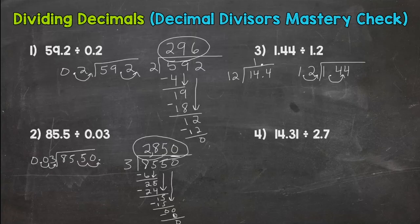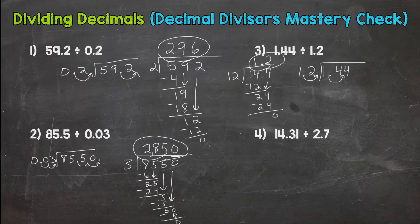14 divided by 12. 1. 1 times 12. Subtract I get 2. Bring down that 4. 24 divided by 12 is 2. 2 times 12. 24. Subtract. Get 0. 1.2.